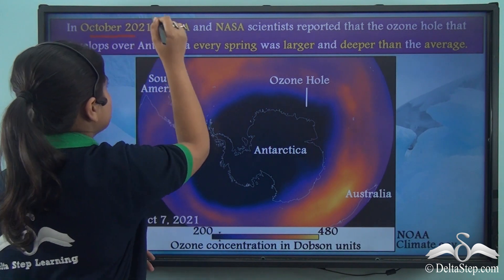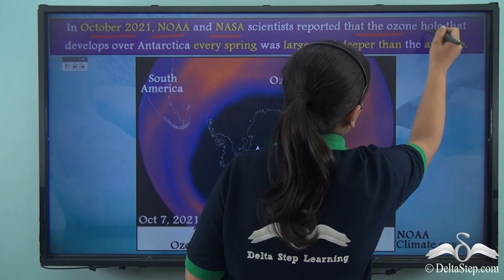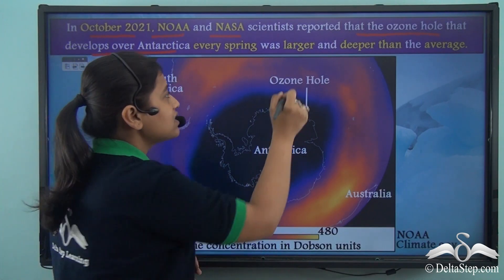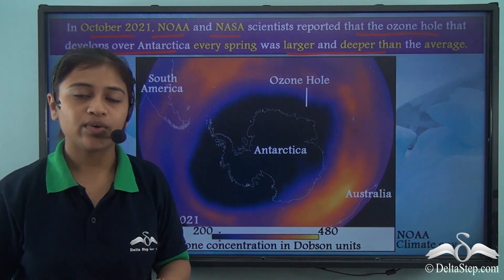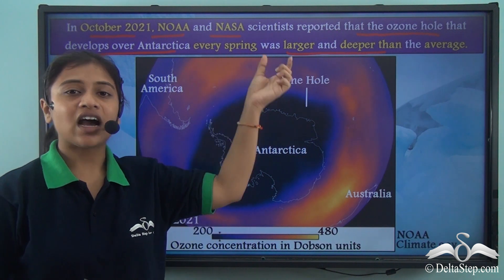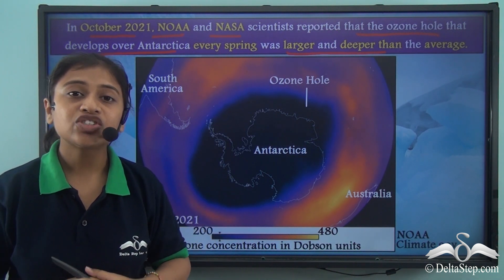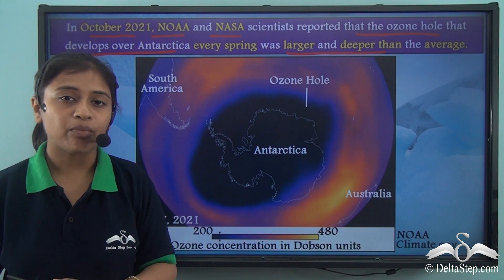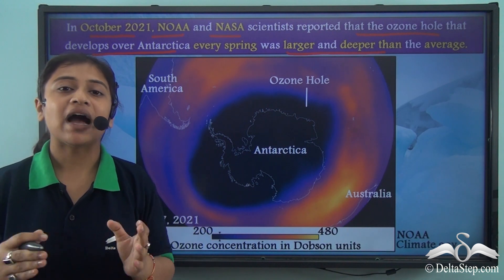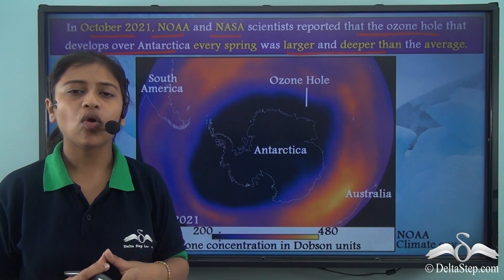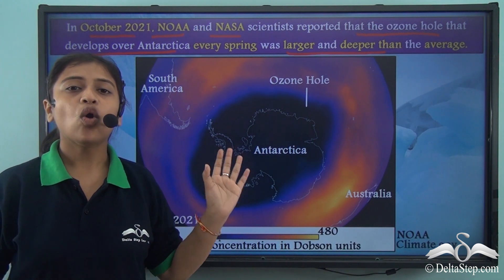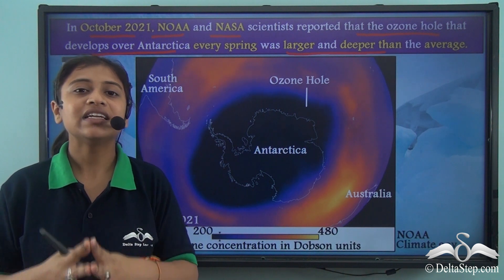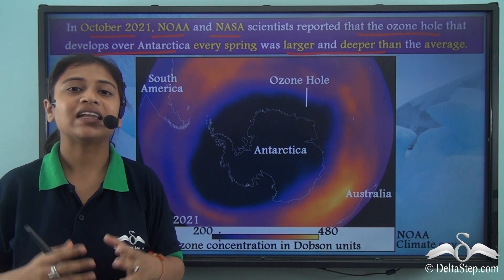In October 2021, NOAA and NASA scientists reported that the ozone hole that develops over Antarctica every spring was larger and deeper than average in 2021. This is mainly because of ozone depletion — the ozone layer is gradually depleting every year, mostly because of human activities and increased global warming.